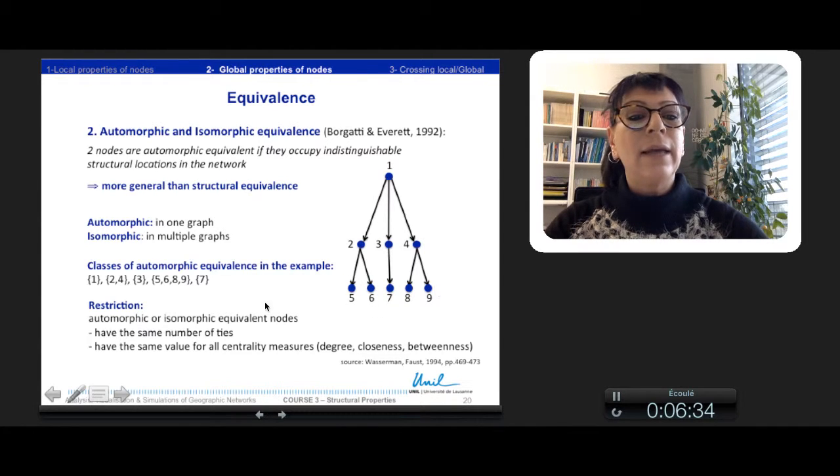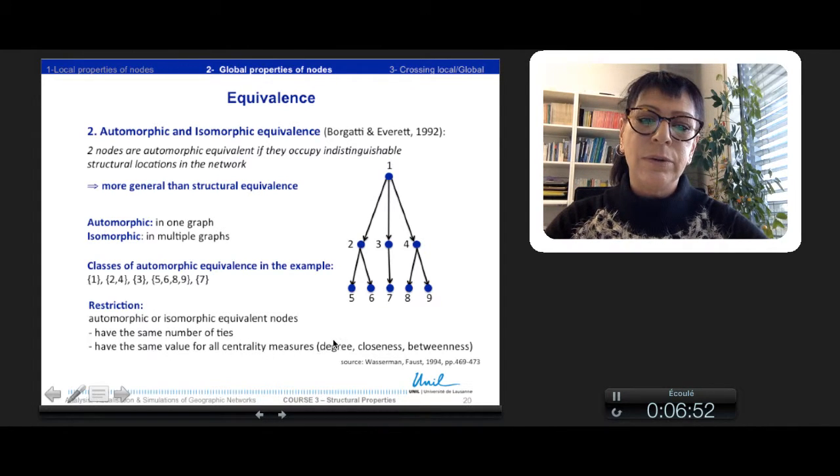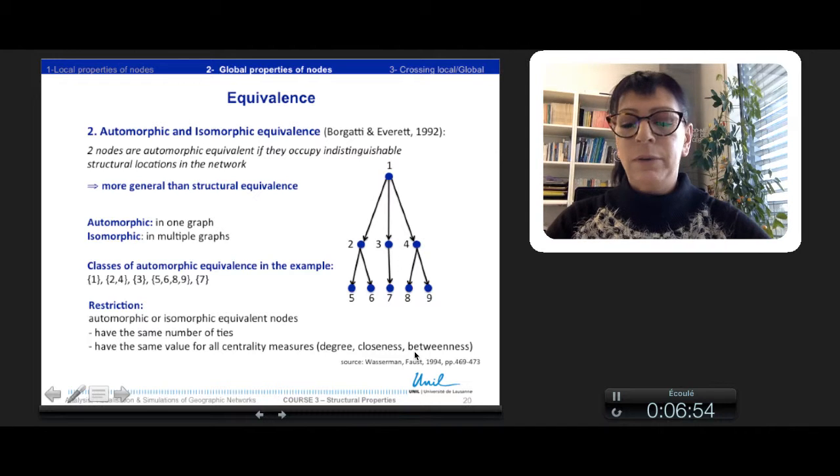5, 6, 8, 9 have the same kind of position and 7 also is alone like 3. So the restriction here is that the nodes of the same class have the same number of ties and they have the same value of all centrality measures: degree, closeness, and betweenness centrality.